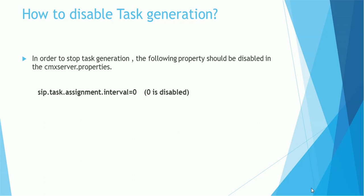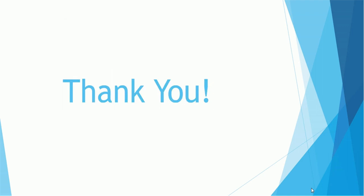The last point is how to disable ActiveOS task generation. In the CMX server properties file, in order to stop the task generation process, we have to set sip.task.assignment.interval to 0, so that task generation will not execute. Even if the daemon is active behind the scenes, it will not create any task because the interval is 0. That is all for today's session. I hope you are enjoying these ActiveOS tutorials. If you have any questions, please mention them in the comment section. Thank you for watching. Have a nice time.